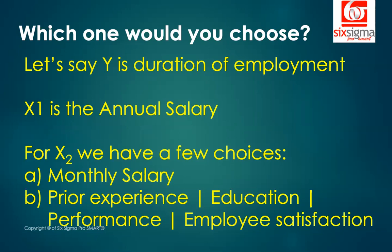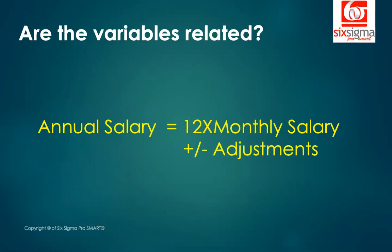Annual salary and monthly salary in most cases will actually be relative. Monthly salary multiplied by 12, plus or minus some adjustments for bonus and taxes, would actually determine the annual salary. So by adding monthly salary, we will not be adding any additional explanatory power to our model. It is no new information we're getting by adding monthly salary when we already have annual salary.